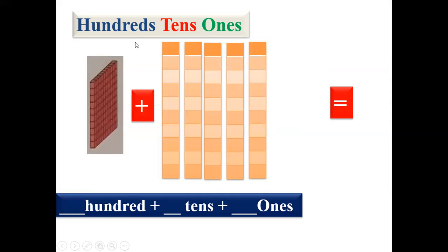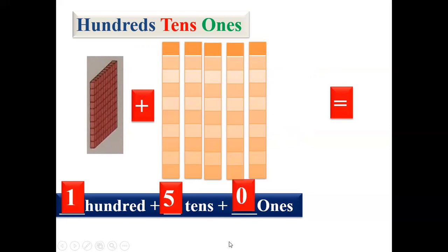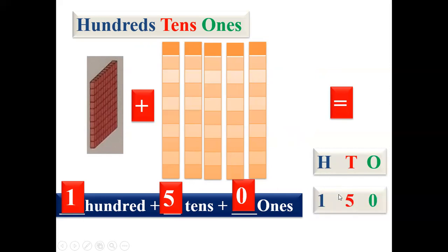This one is again only one hundred, so we'll write one. Now here we can see one, two, three, four, five — five tens are there, write it down. But we can see ones are not there, so we are going to write zero. So we'll write one in hundreds, five in tens and zero in ones.